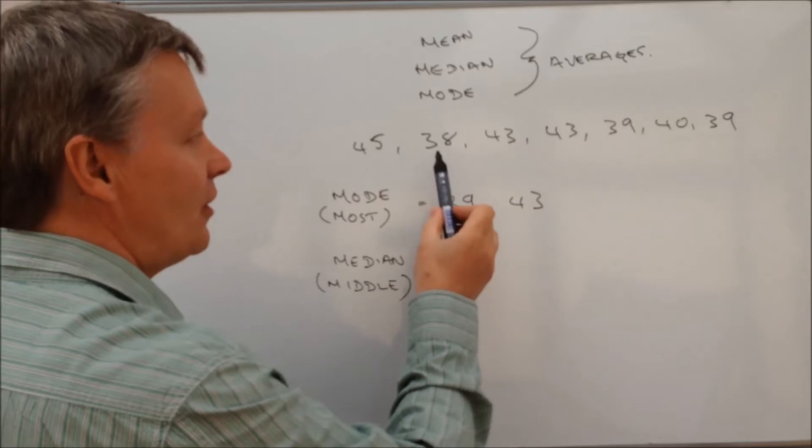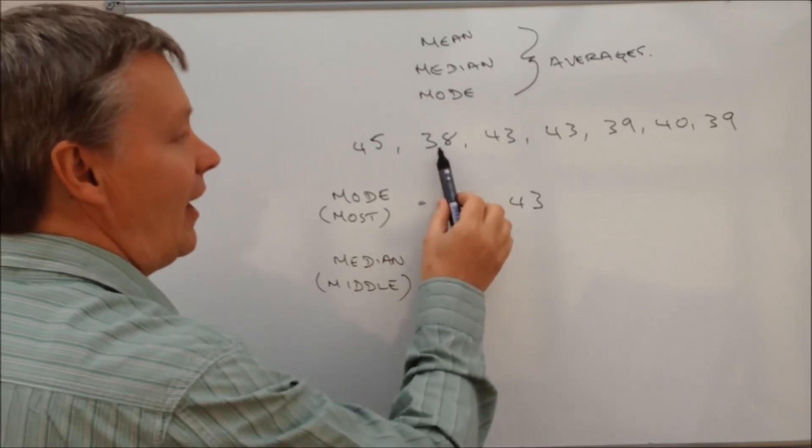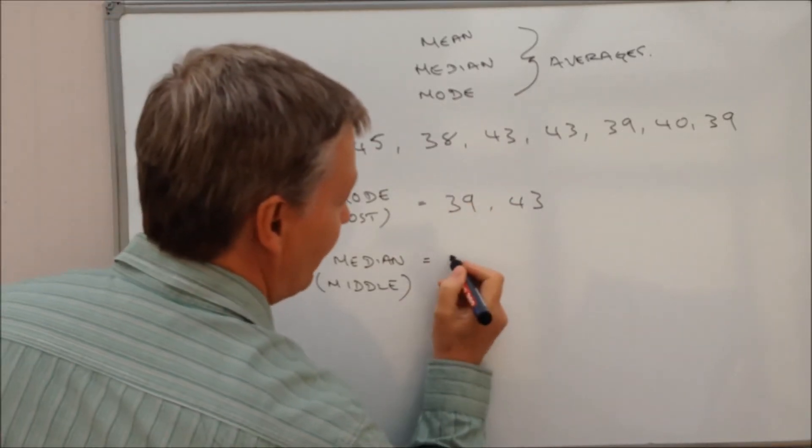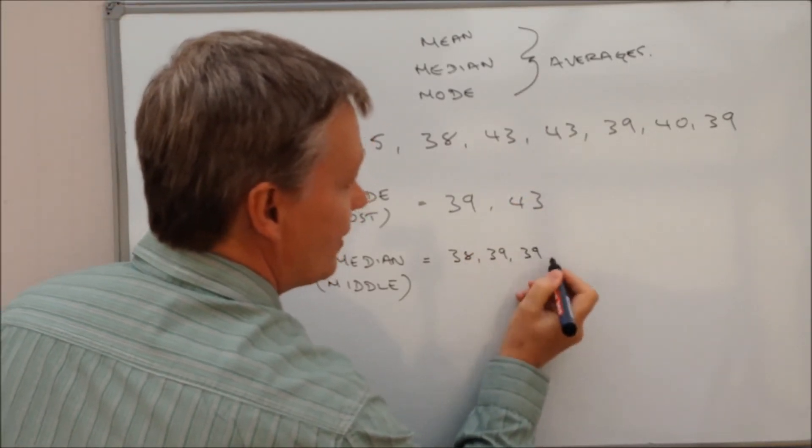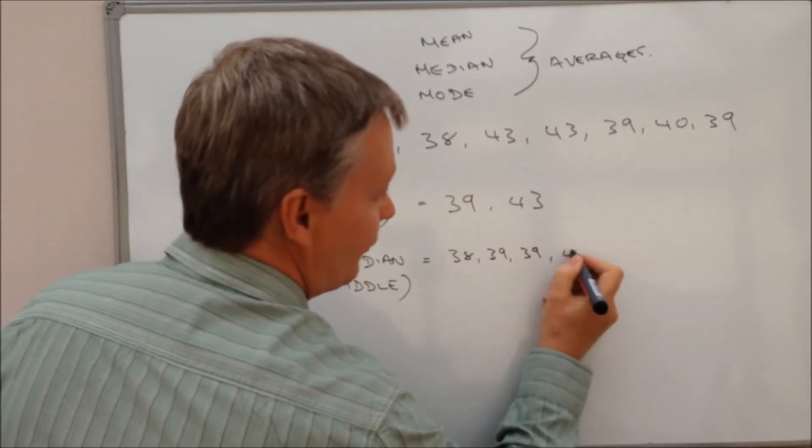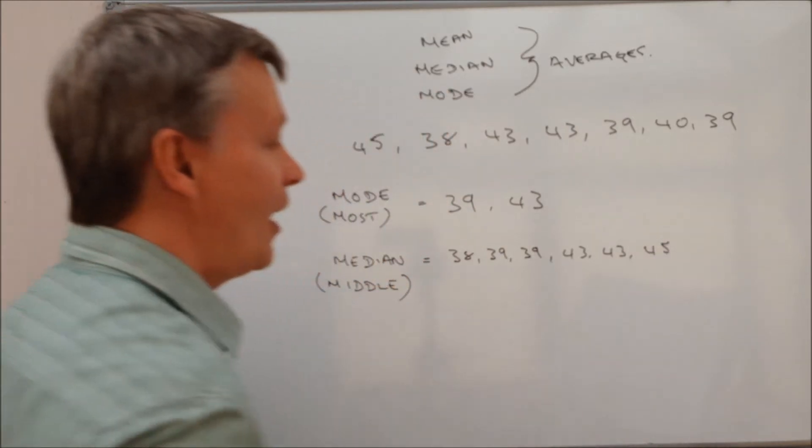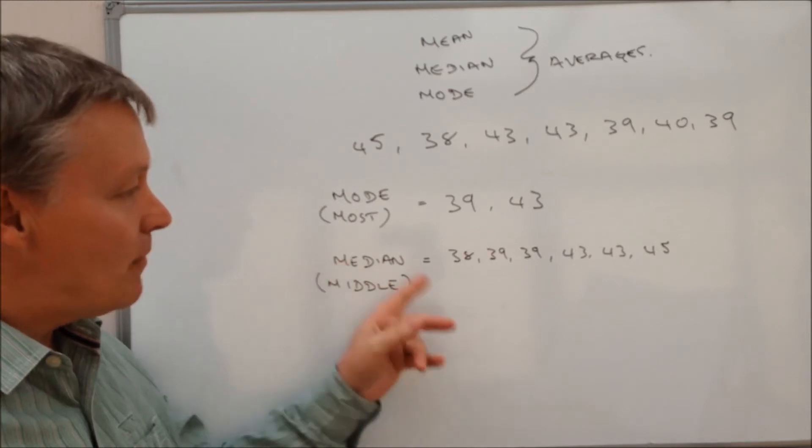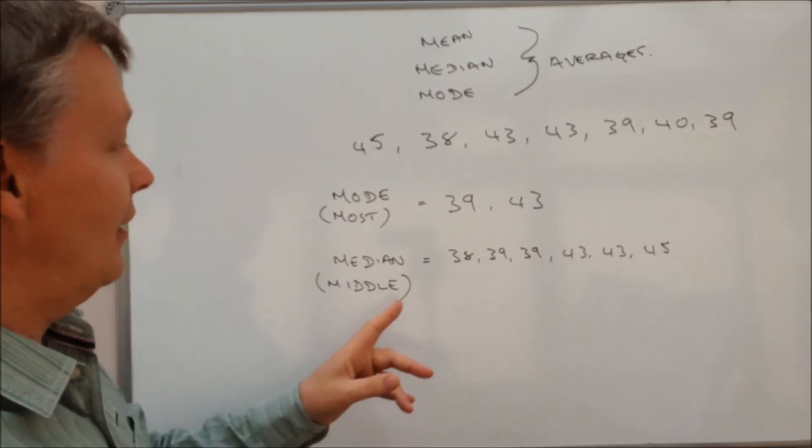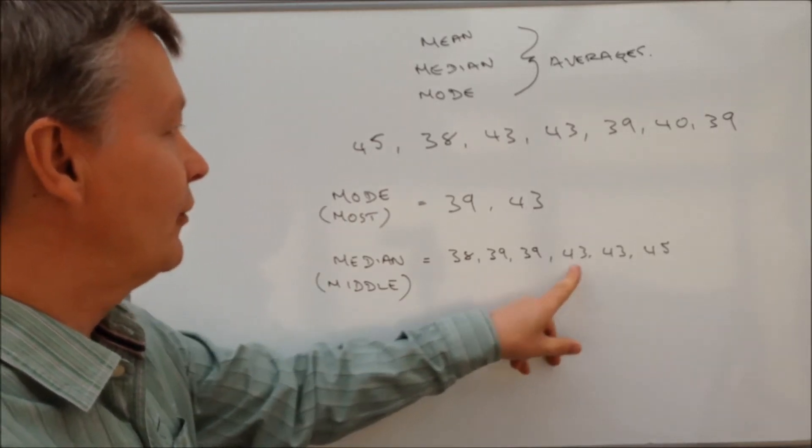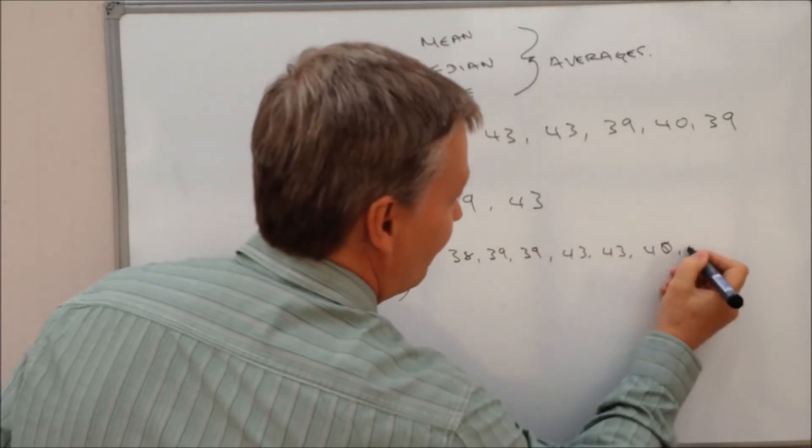And what you have to do is to write out the numbers in their ascending order. So we've got 38, the next one is 39, the next one is 39, the next one is 43, then 43, and then 45. I think I need to check that, so I've got 38, 39, 39, 43, 43, 40, and 45. That's better, 40 and 45.